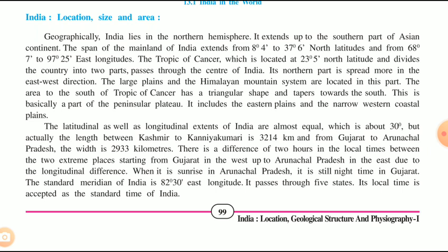India extends from 8 degrees to 37 degrees north latitude and from 68 degrees 7 minutes to 97 degrees 25 minutes east longitude. We know that the Tropic of Cancer passes through the center — from the part of Gujarat up to Assam — and it divides India into two equal divisions.